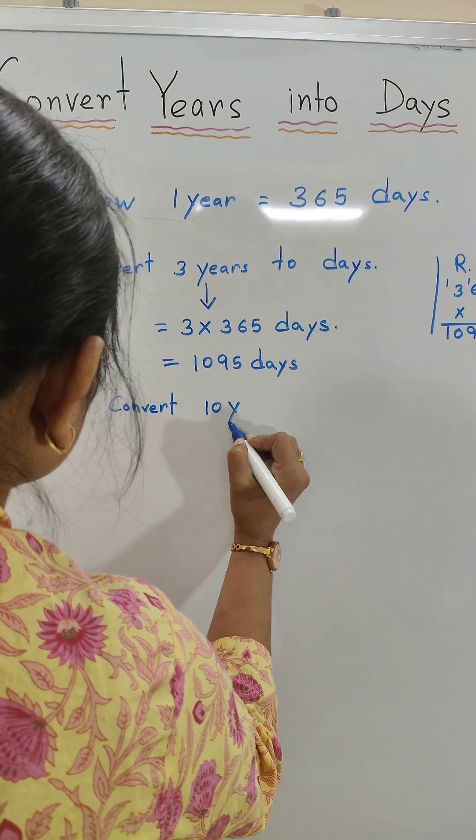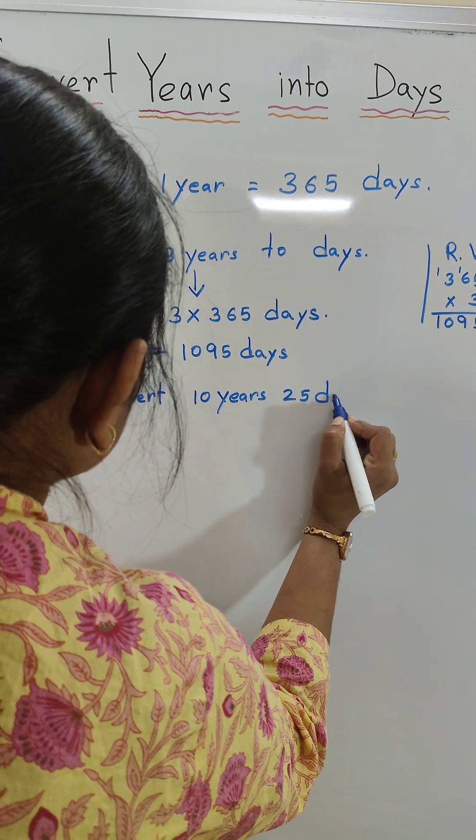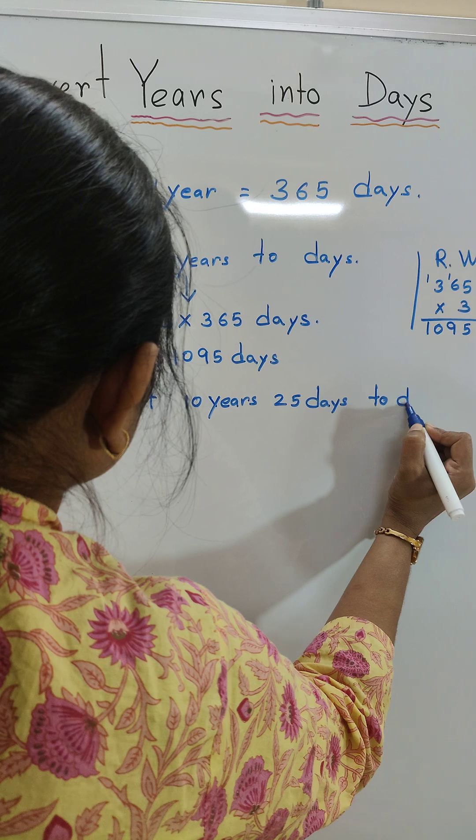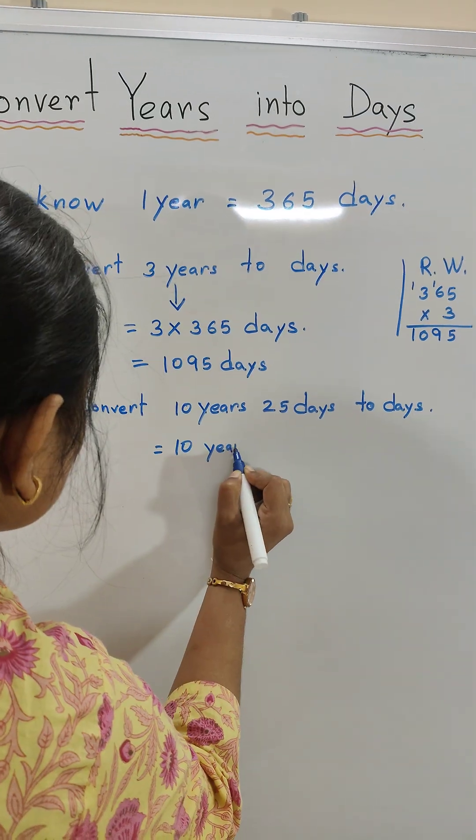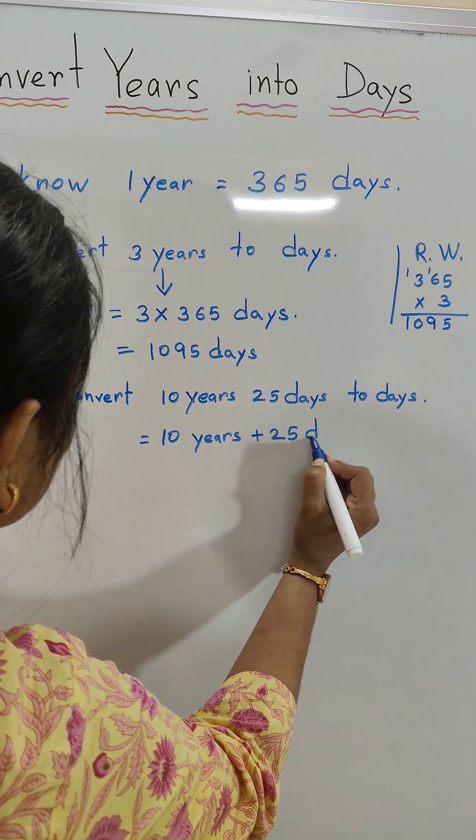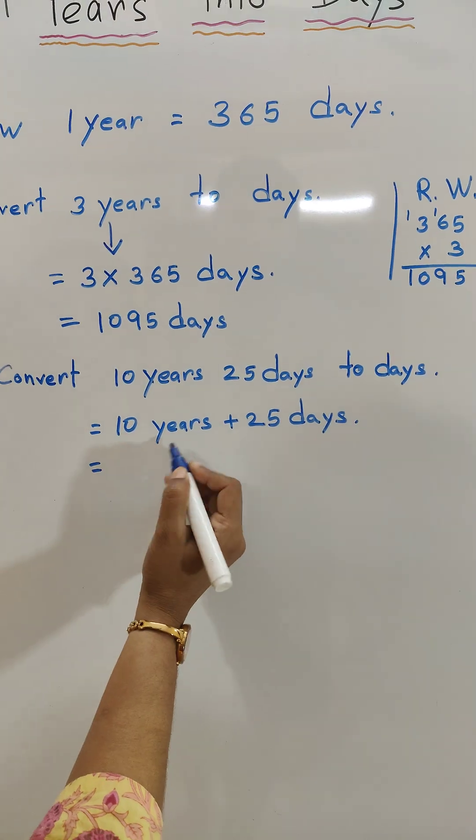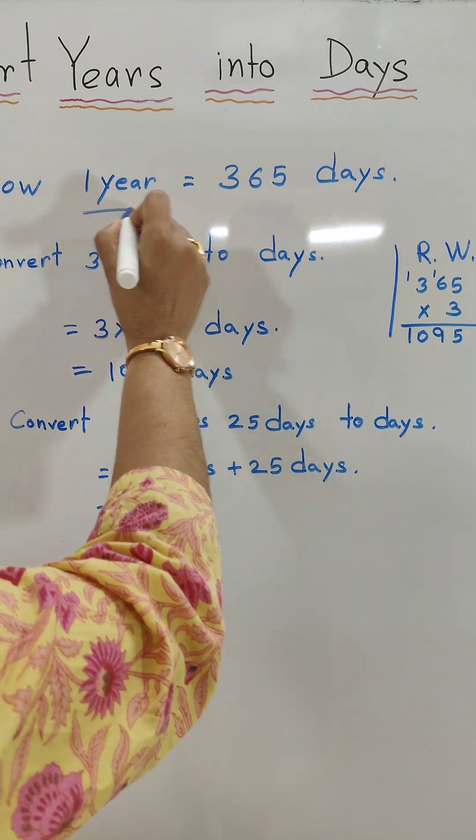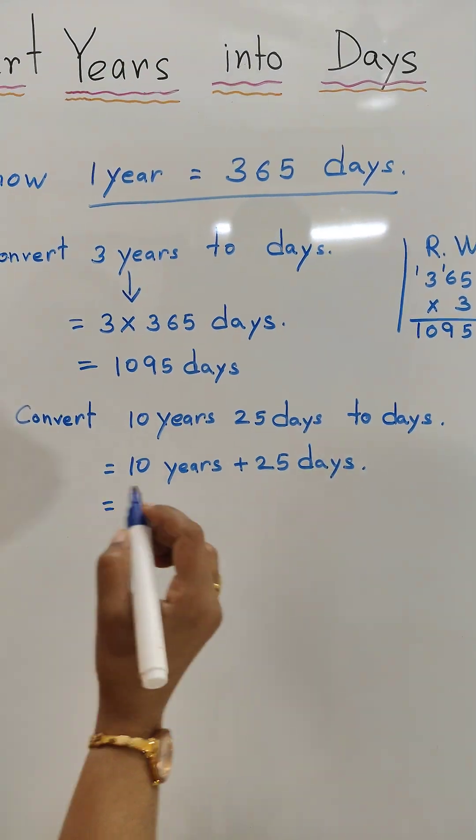Convert 10 years 25 days to days. 10 years plus 25 days. We know one year is equal to 365 days.